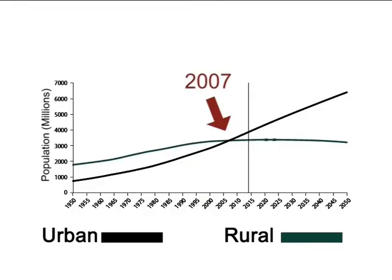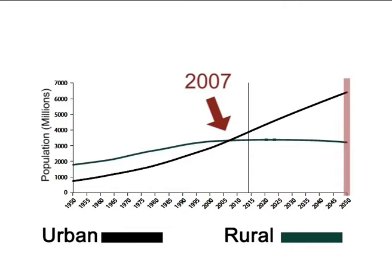Globally, more people live in urban areas than in rural areas. The global urban population exceeded the global rural population for the first time in history in 2007, and the world population has remained predominantly urban thereafter, as shown in Figure 1. In 1950, more than two thirds — that is 70% — of people worldwide lived in rural settlements and less than one third — 30% — in urban settlements. In 2014, 54% of the world's population was urban. By 2050, the world will be one third rural (34%) and two thirds urban (66%).